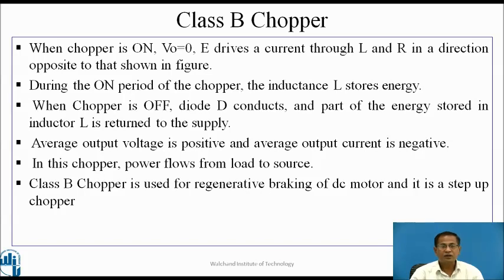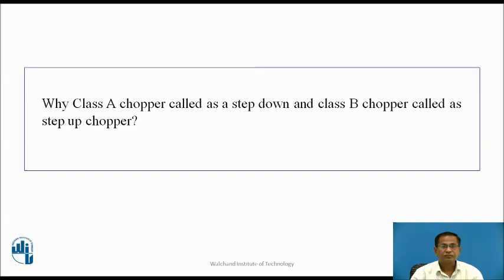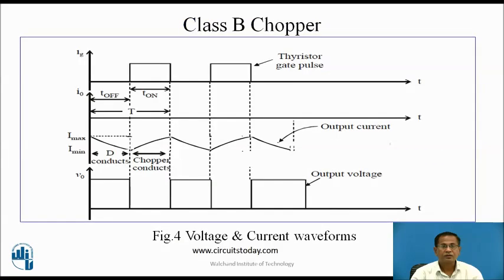Class B chopper is used for regenerative braking of DC motor and it is the step-up chopper. These are the waveforms for the Class B chopper. During T-on, when the chopper switch is in conducting state, the current increases from I-min to I-max, and for this duration V0 is equal to zero. During T-off, the current decreases from I-max to I-min and V0 is equal to Vs plus L·di/dt.